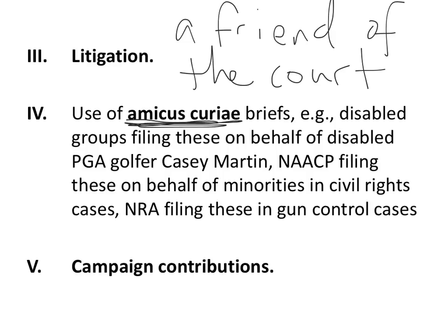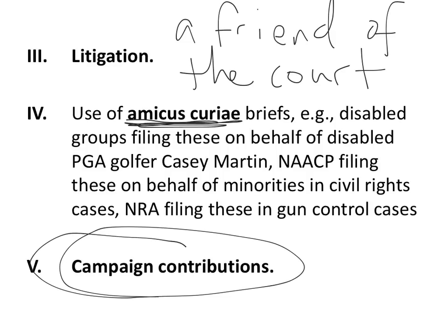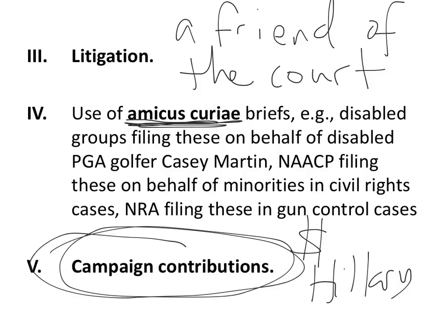Another tactic is campaign contributions. Groups that are pro-women's right to choose might support Hillary Clinton and send her money because she agrees with their point of view. Or the NRA will send money to a more conservative candidate. Once that person is elected, there's an implicit agreement — you scratch my back, I scratch yours — and they'll probably support your cause when in office.